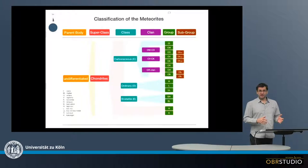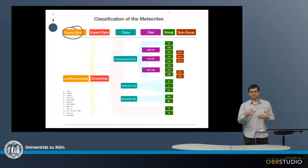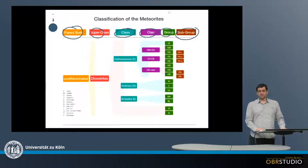Over the past years and decades, a large number of classification schemes were published by people like Krot, Weisberg, Bischoff, and so on. I took all these classification schemes to produce one single scheme here, which has a six-step classification tree. It starts with the parent body, then there's the superclass, then class, clan, group, and subgroup.